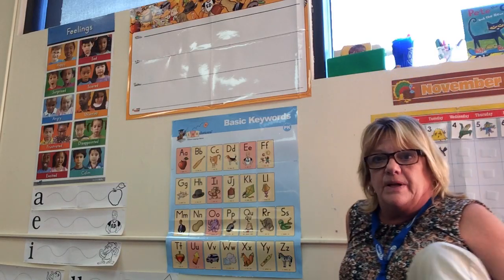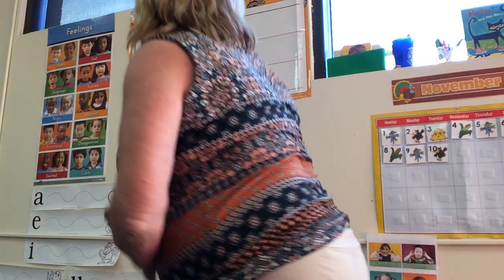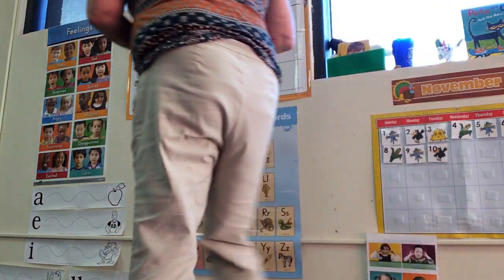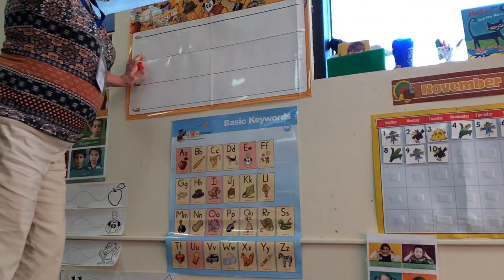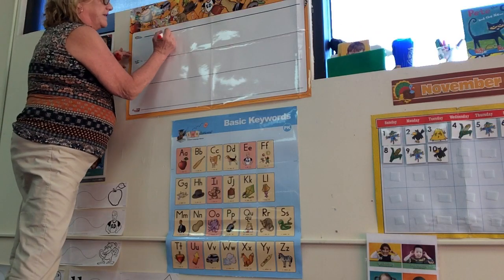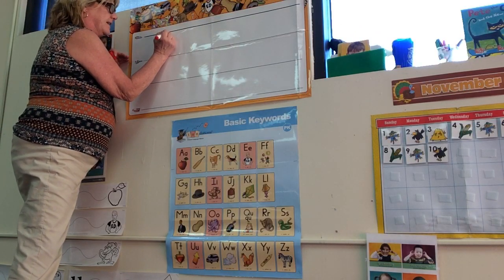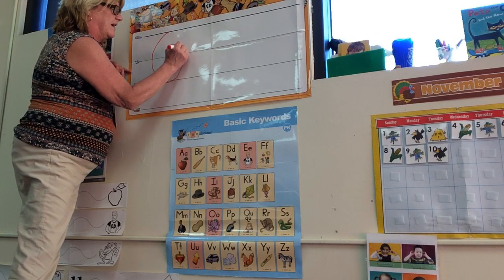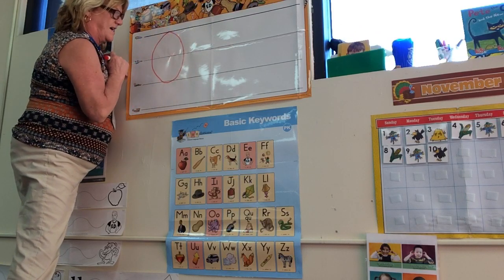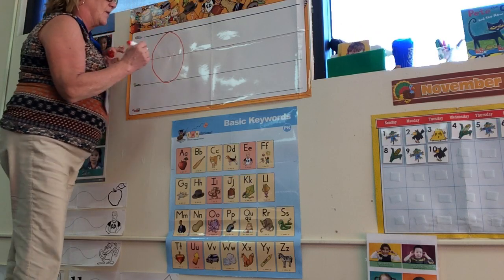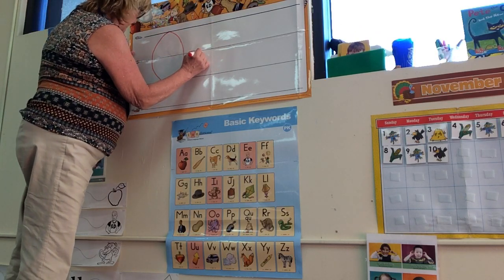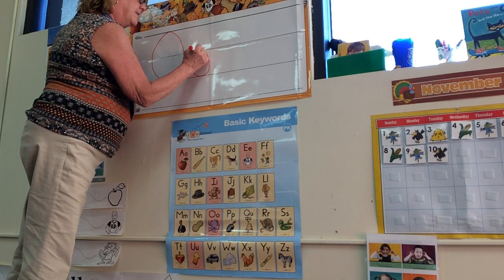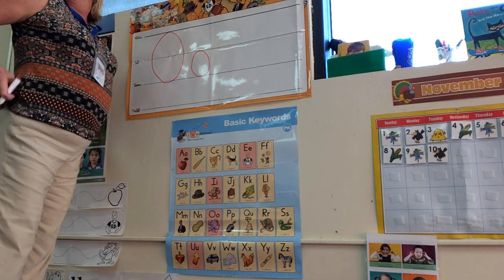Now I'm going to stand up here and I'm going to show you how to write them both. For the O, we're going to start right up here on the skyline and we're going to curve around and down to the grass line and then curve back up to the sky. That's an uppercase O. For lowercase, we're going to start on the plane, curve around and come back up to the plane.